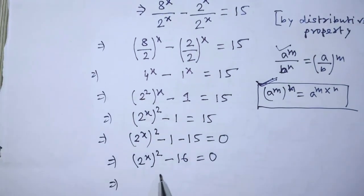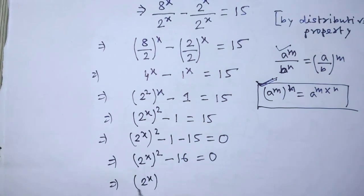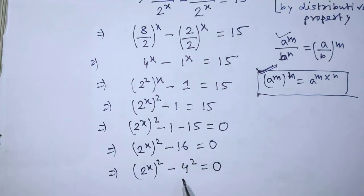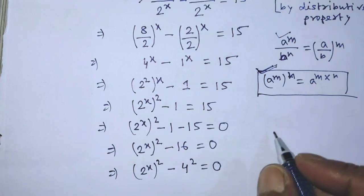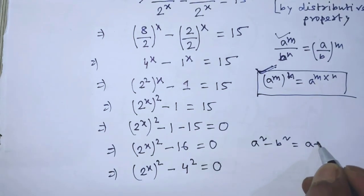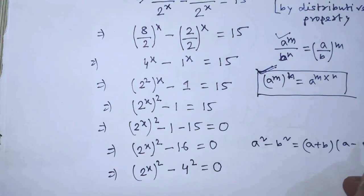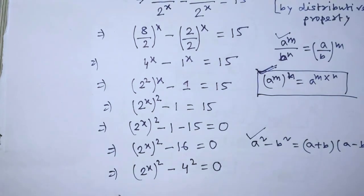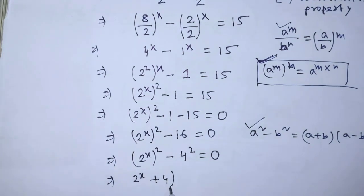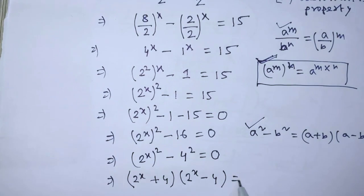On the left hand side, we can write 2 to the power x, whole squared, minus, in the place of 16, we write 4 to the power 2, is equal to 0. To simplify the left hand side, we apply the formula a squared minus b squared equals a plus b times a minus b. According to this formula, we can write: 2 to the power x plus 4, times 2 to the power x minus 4, is equal to 0.